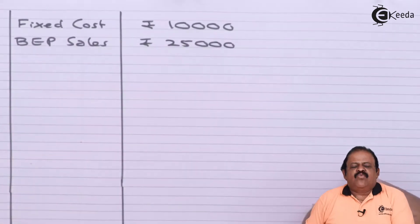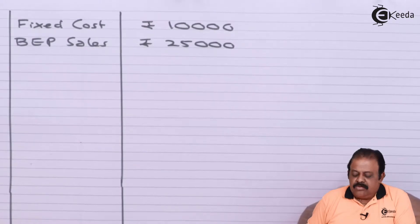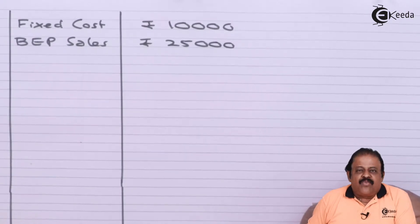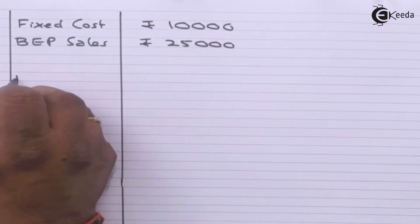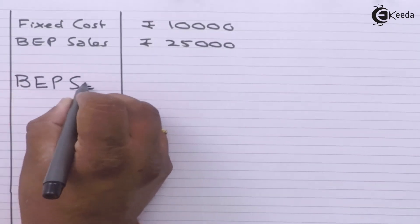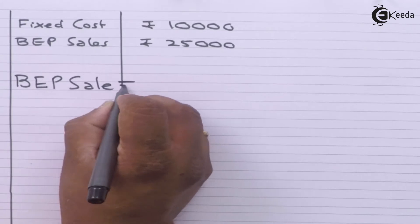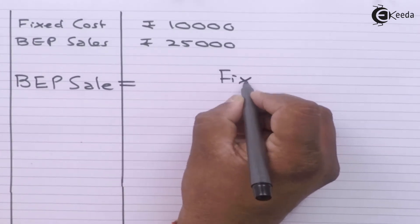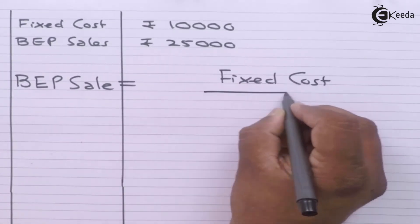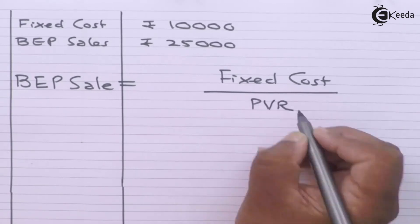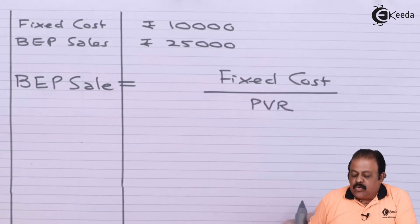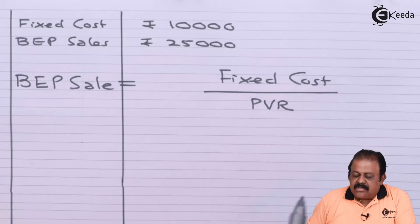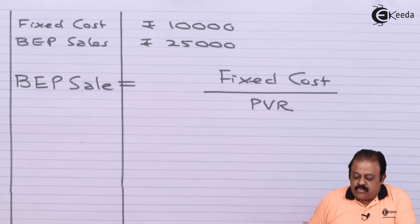We are required to find out the profit volume ratio. Let us use one formula where we try to find out the breakeven point sales. The formula is: breakeven point sales is equal to fixed cost divided by the profit volume ratio.